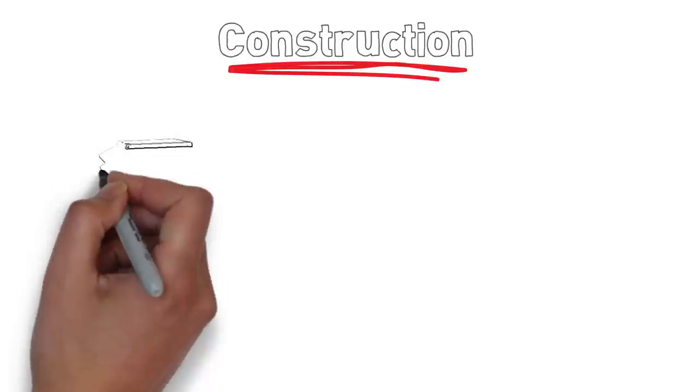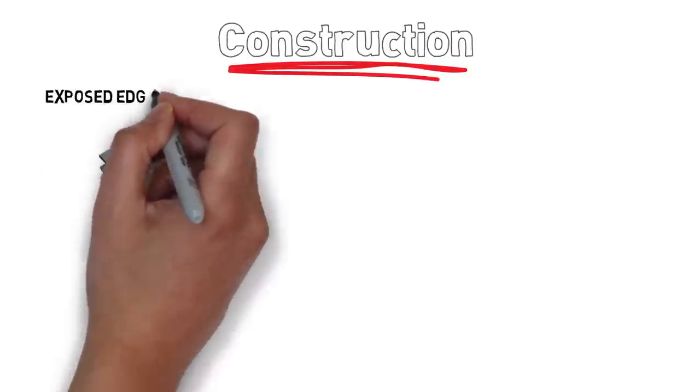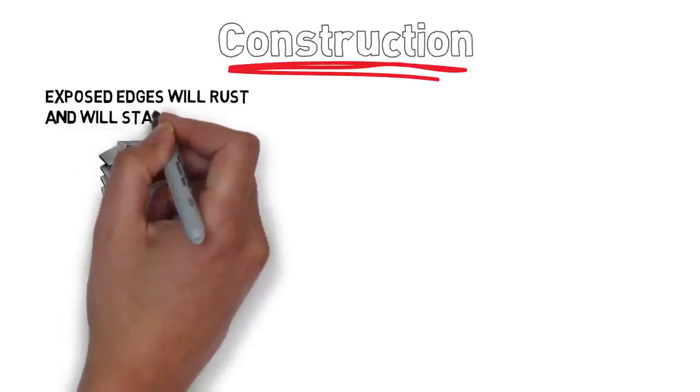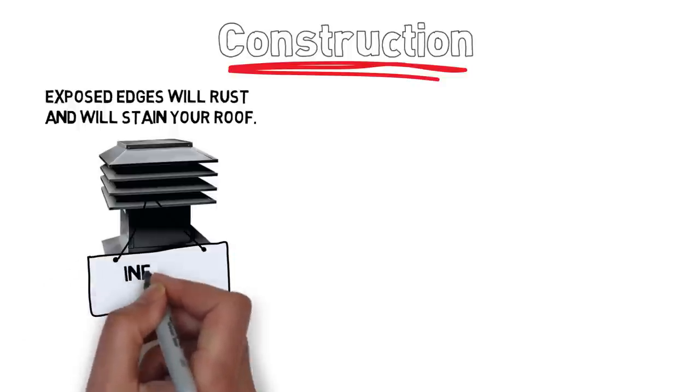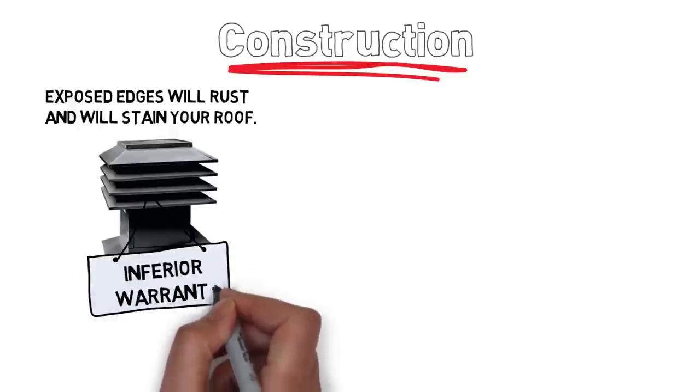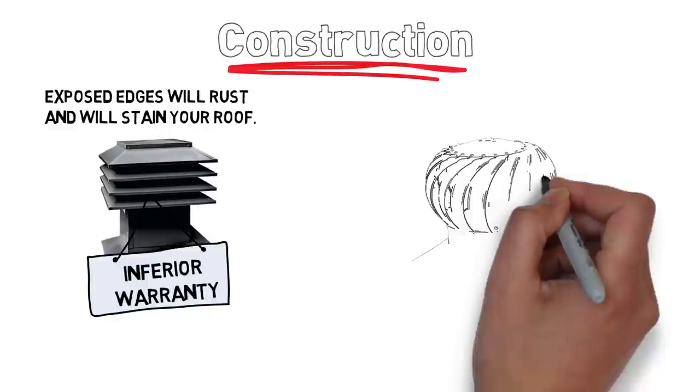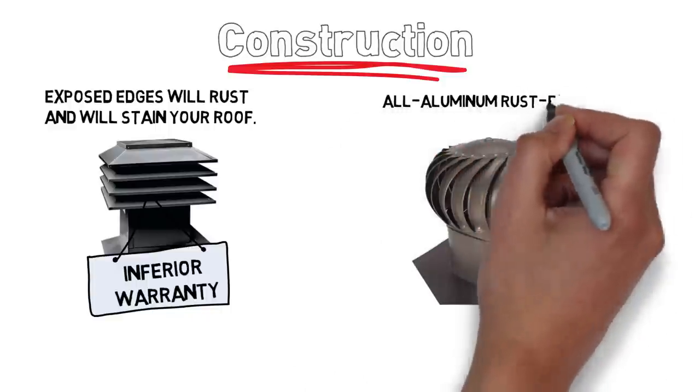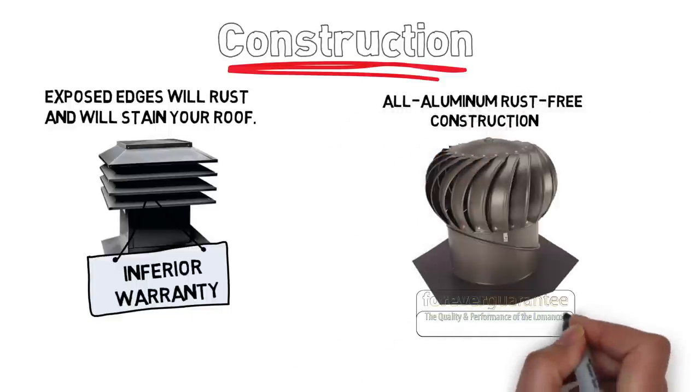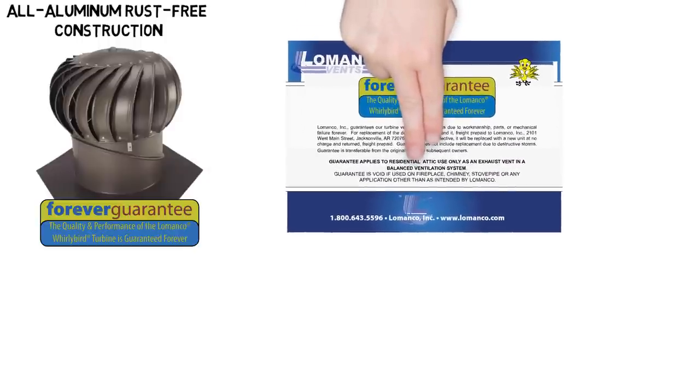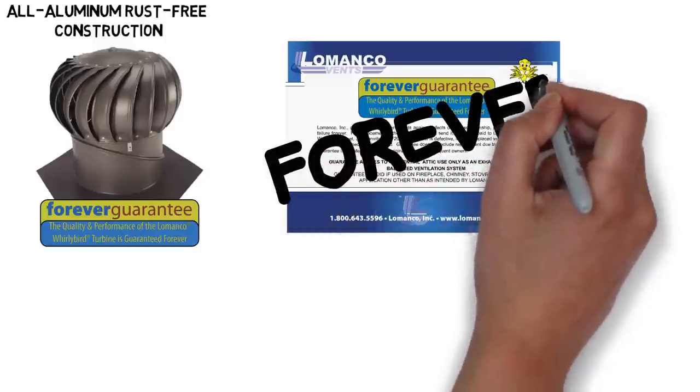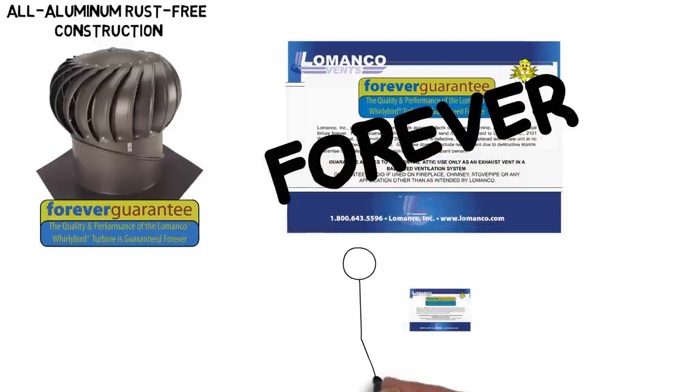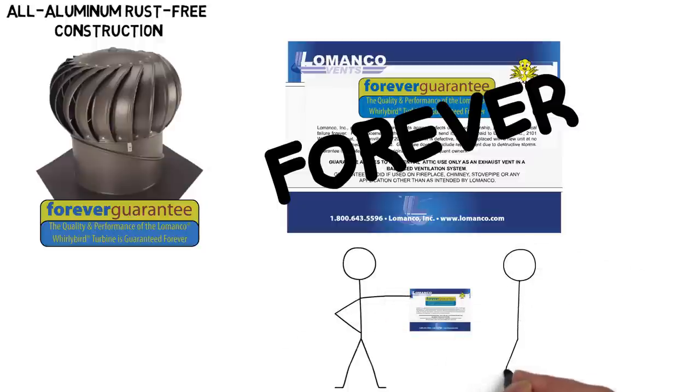The Maximum is made from galvanized sheet metal with exposed edges that will ultimately rust and stain your roof. It also has an inferior warranty when compared to the Lamanco Whorlybird turbines, all aluminum, rust free construction and forever guaranteed. That's right. The Lamanco Whorlybird is guaranteed forever, as long as you own your home and is fully transferable from homeowner to homeowner.